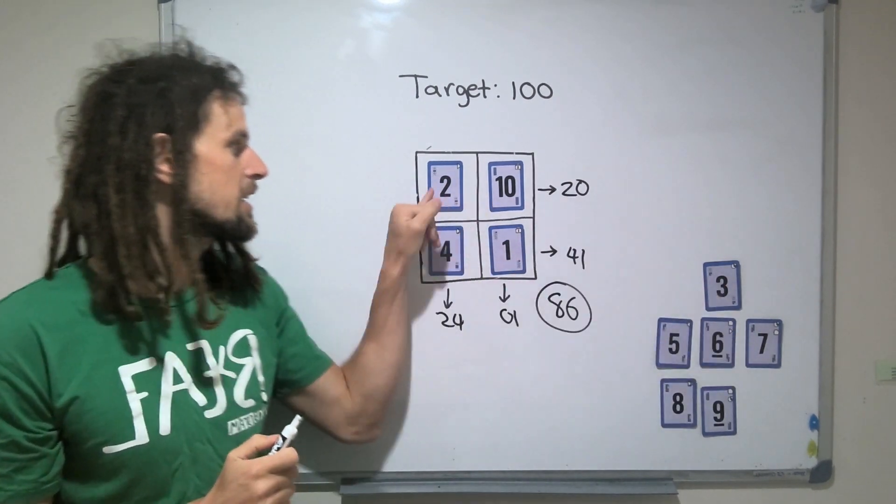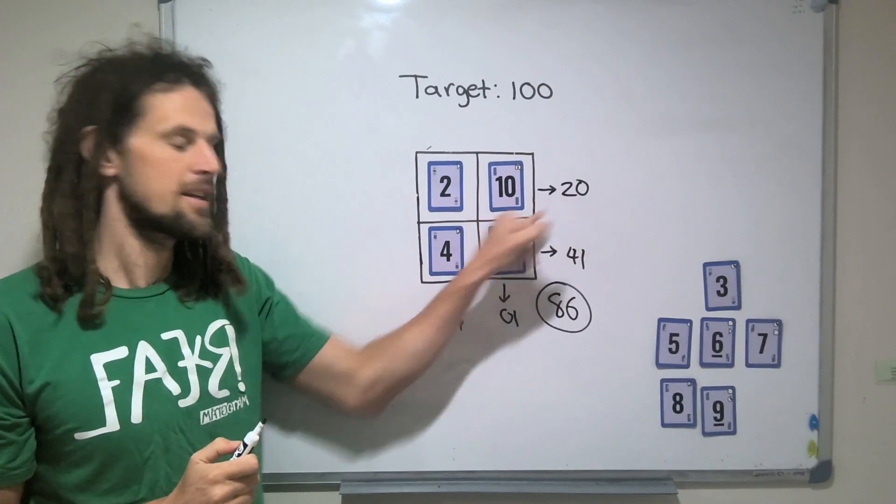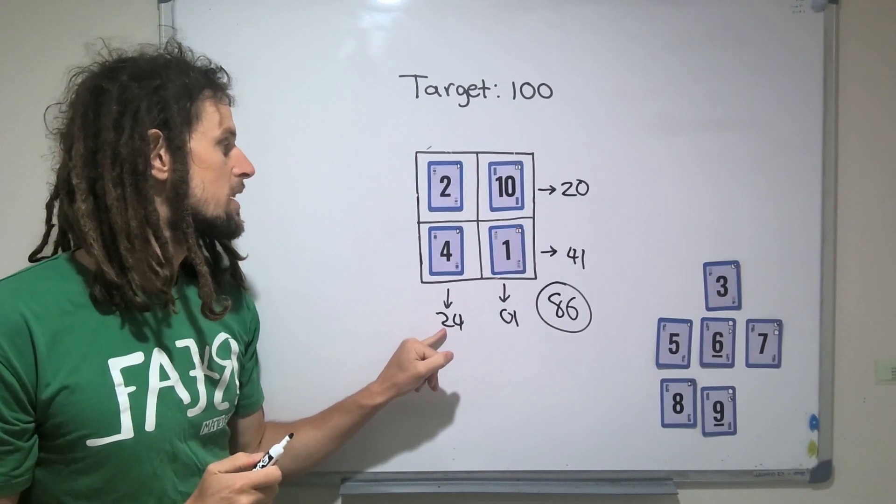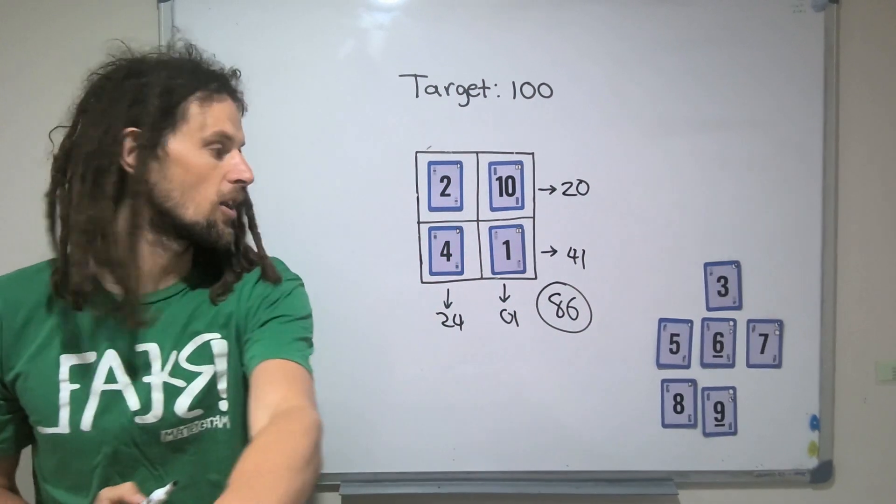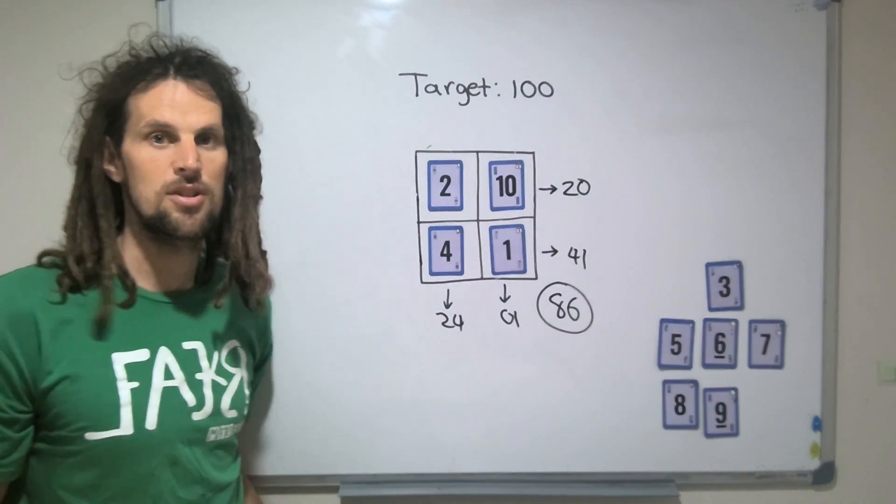So if we change that 2 to a 3, we're making that number 30 and that number 34. So we're adding 20 to the total, which will get us kind of close. We'll be on 106 then, which is not bad.